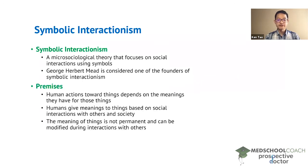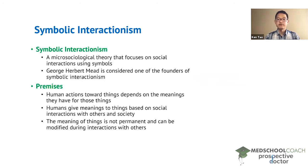Symbolic interactionism has three premises. First, human actions toward things depend on the meanings they have for those things. Second, humans give meanings to things based on social interactions with others in society. And third, the meaning of things is not permanent and can be modified during interactions with others.